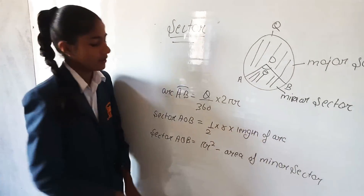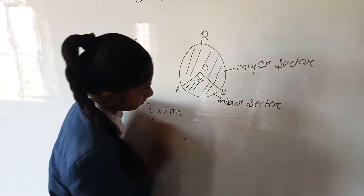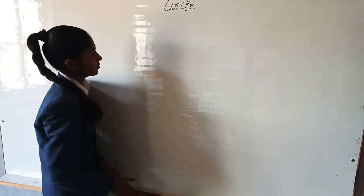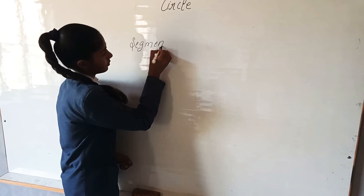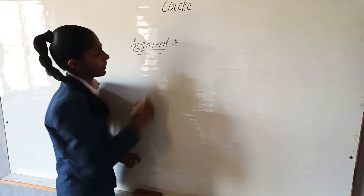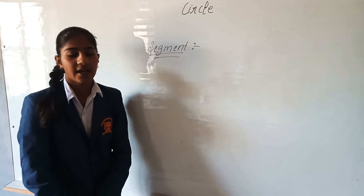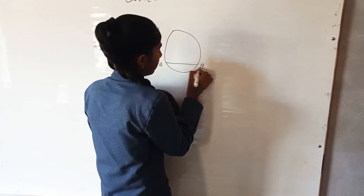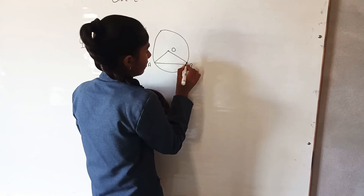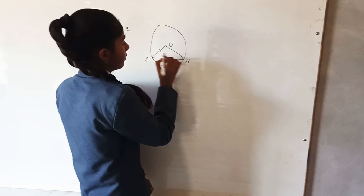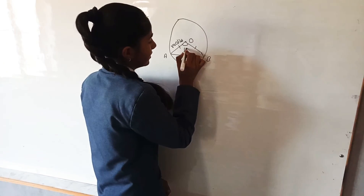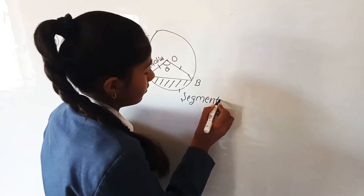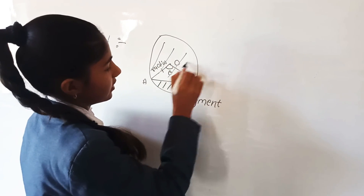Our next topic is segment. A segment is the region formed by a chord and an arc. Let this chord AB be drawn, where OA and OB are the radii and theta is the angle at center O. The smaller region is known as the minor segment and the larger region is known as the major segment.